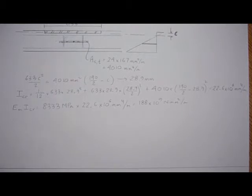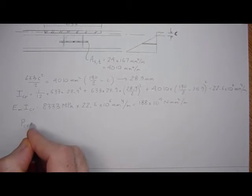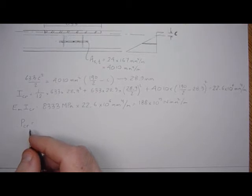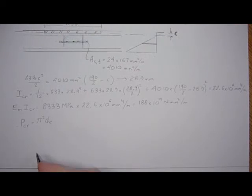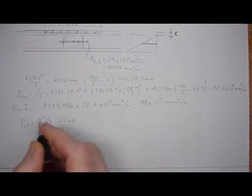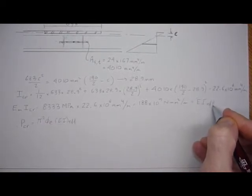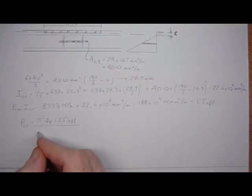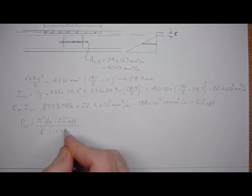So now we can calculate what the P critical is. And we know that from the code it's pi squared Phi E EI effective, so what we can just calculate right here is EI effective.